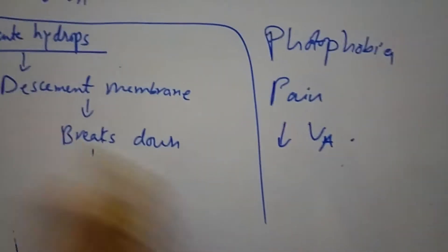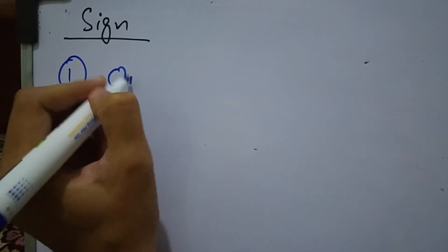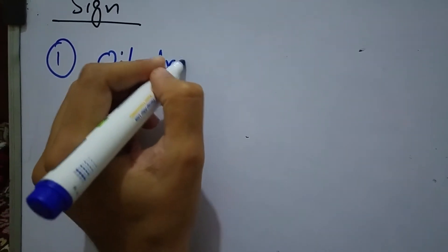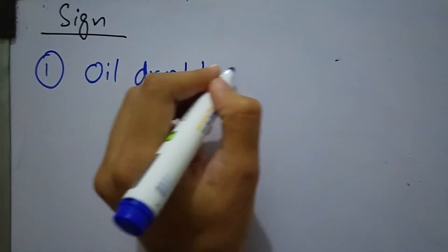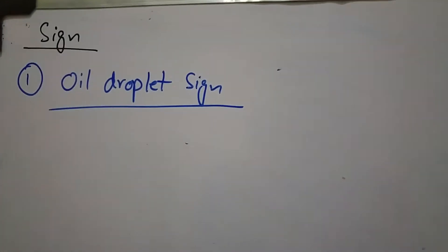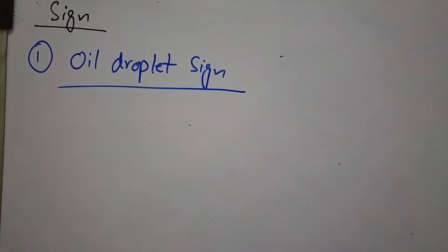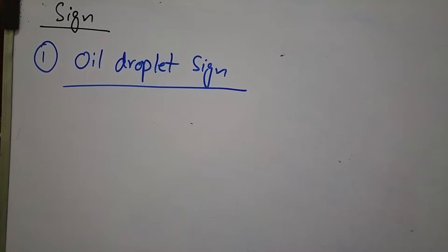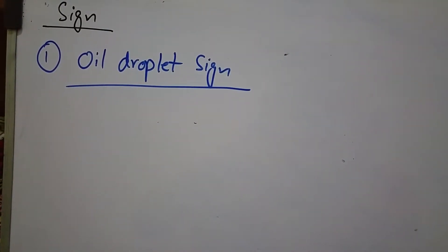Now I will tell you about the signs of keratoconus. There are a number of signs that help in diagnosing keratoconus. Number one is oil droplet sign. Oil droplet sign is seen during direct ophthalmoscopy at a distance of 50 centimeters. You will see an oil droplet reflex.